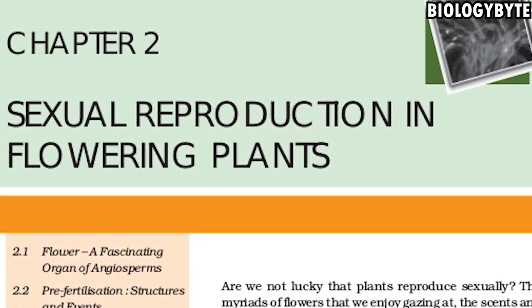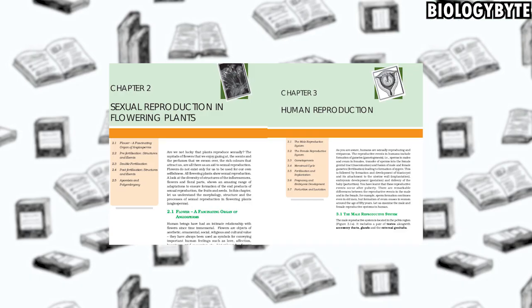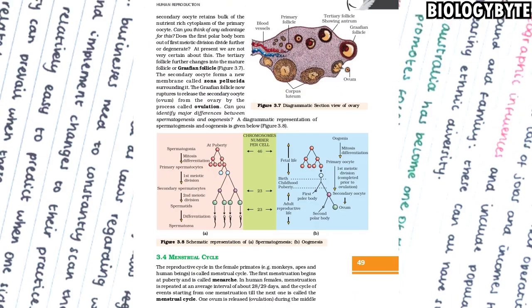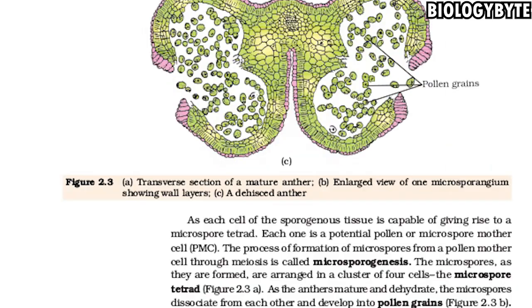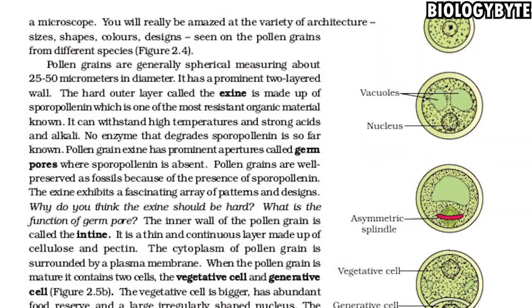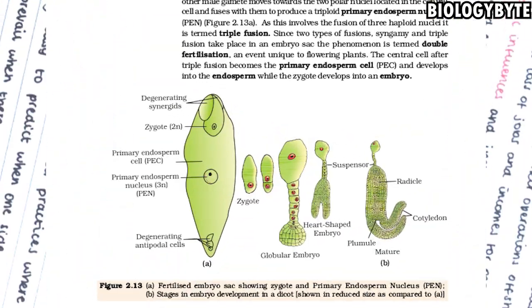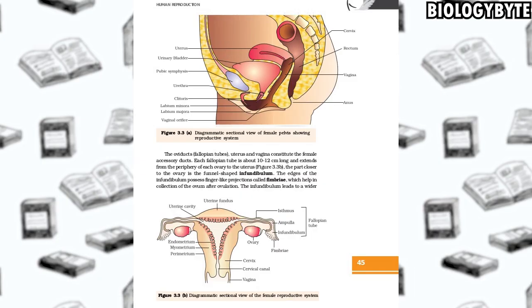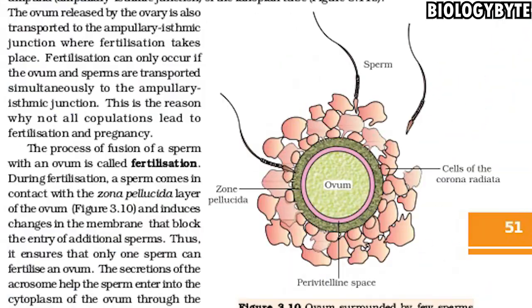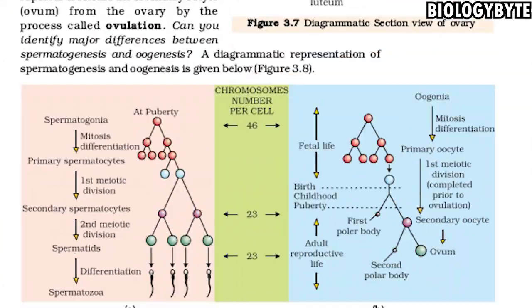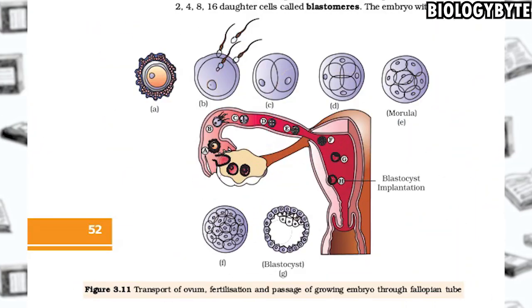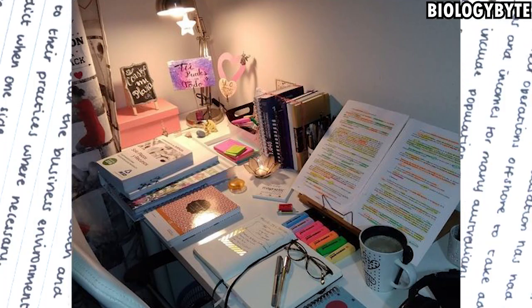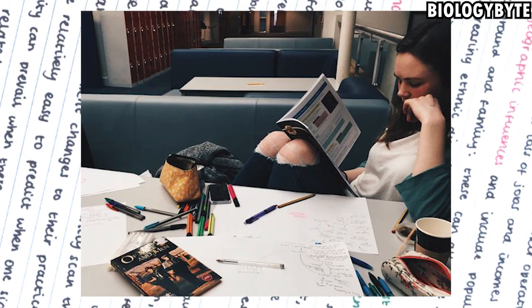Then Chapter 2, Reproduction in Flowering Plants, and Chapter 3, Human Reproduction. In these two chapters, you have to remember the 'genesis' processes. In Chapter 2: Microsporogenesis and Megasporogenesis — each and every step. In Human Reproduction: Spermatogenesis and Oogenesis — each and every step. Put them in your mind 10-15 times and revise them well.